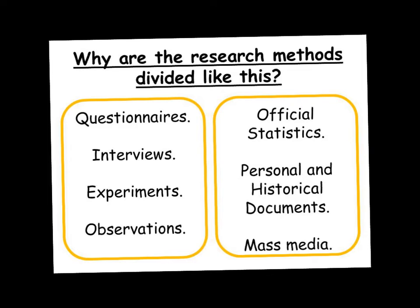If we look at this slide, we've again got the research methods divided but they're in different groups this time. There's something different between the ones on the left hand side and the ones on the right hand side. Questionnaires, interviews, experiments and observations are all research methods that sociologists would use, as are the use of official statistics, the use of personal and historical documents, and the use of the mass media. But there's something different between the two.